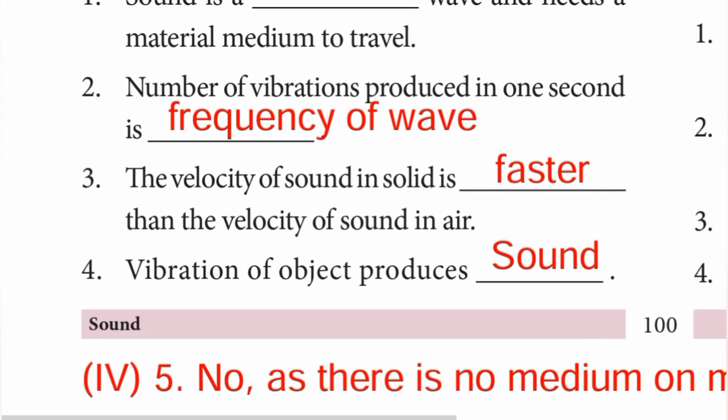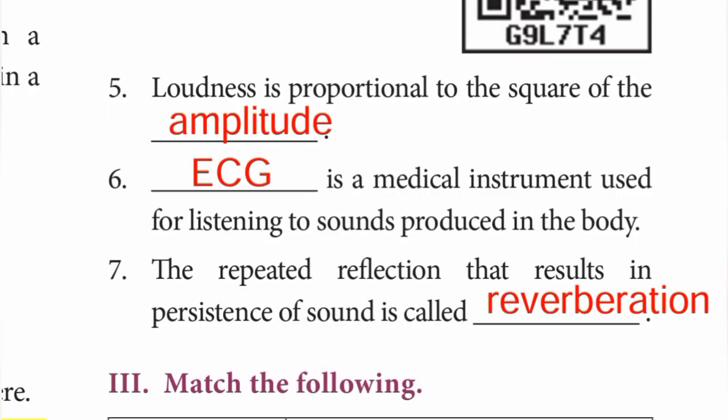Question 3: The velocity of sound in solid is faster than the velocity of sound in air. Answer: faster. Question 4: Vibration of an object produces sound. Answer: sound. Question 5: Loudness is proportional to the square of the amplitude. Answer: amplitude.